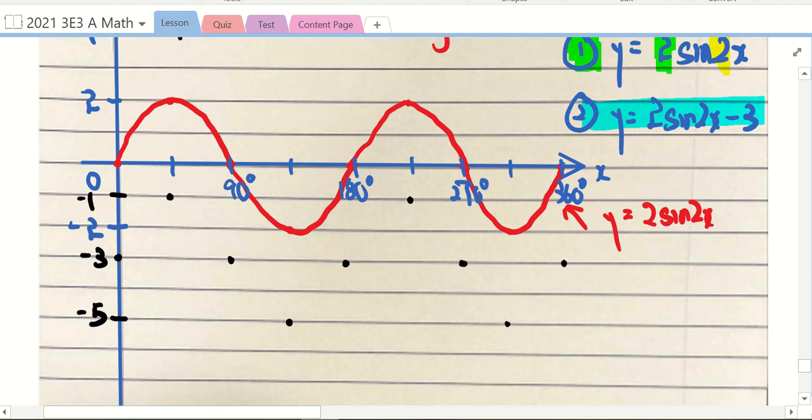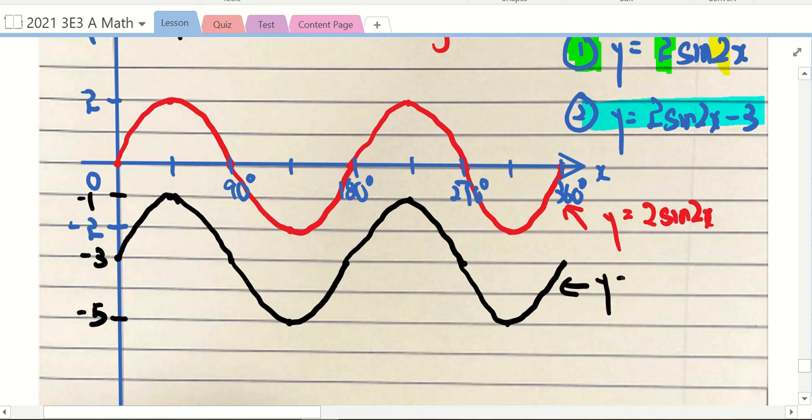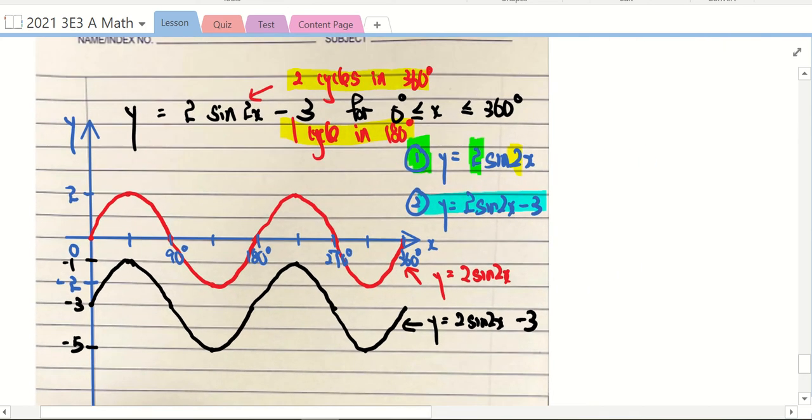Can you see the black dots? Now I'm going to join them together. Then label y = 2sin(2x) - 3. Okay, point by point. This will be easier for you. All right, I'm going to stop here.